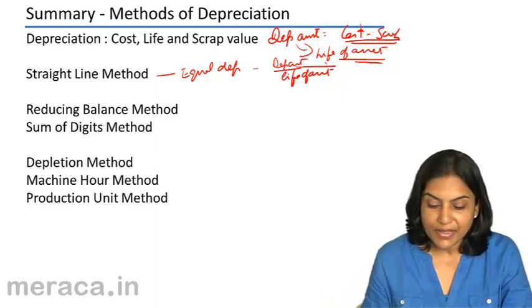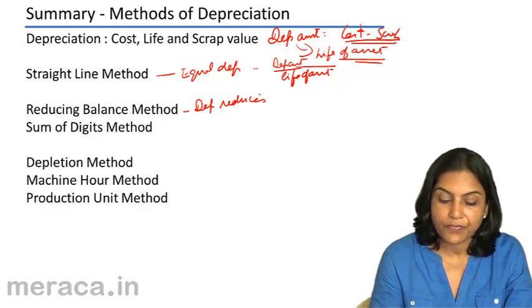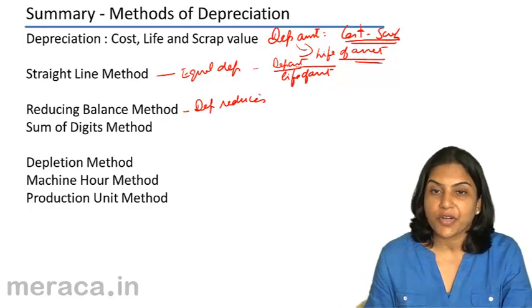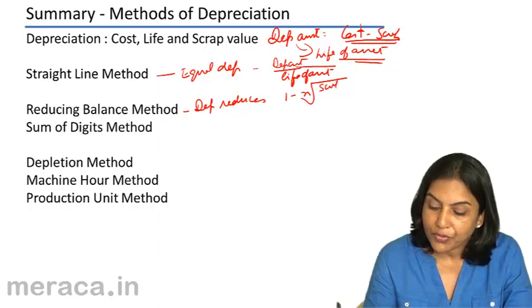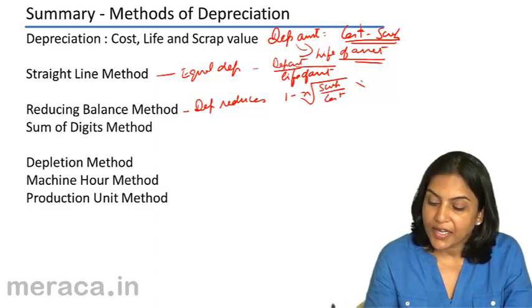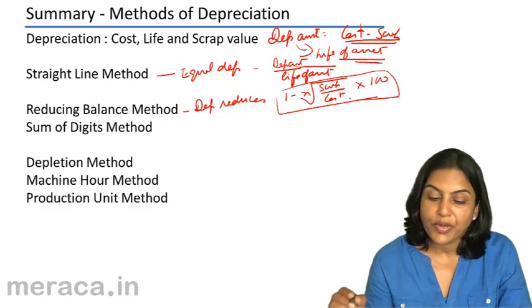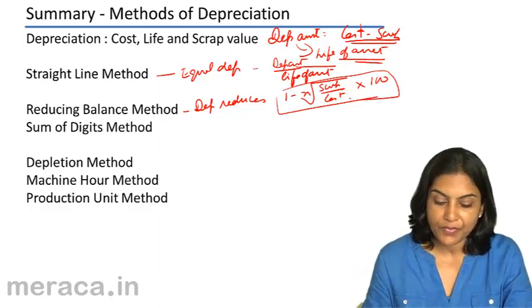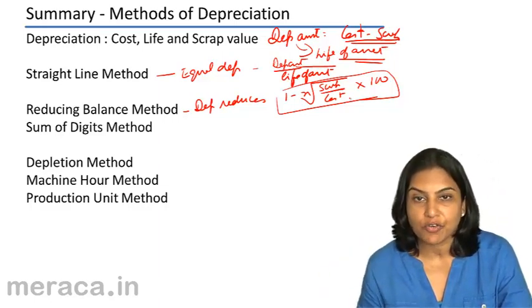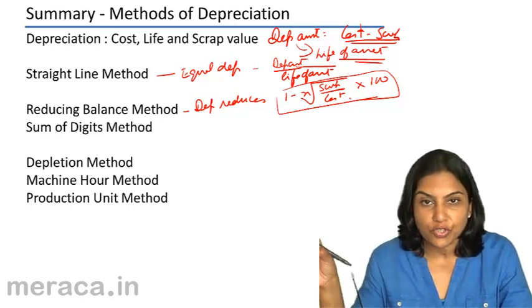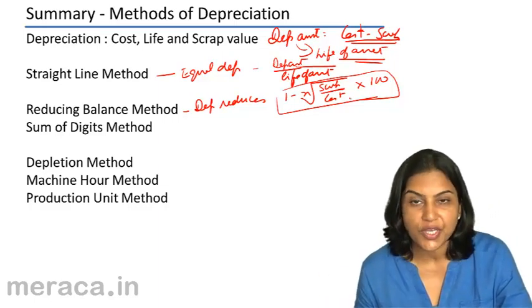Under the reducing balance method, the amount of depreciation reduces each year. The rate of depreciation is computed as 1 minus the nth root of scrap value divided by cost of asset. This fixed rate is then applied on the reducing balance — the written down value or book value of the asset — so the amount of depreciation goes on reducing every year.